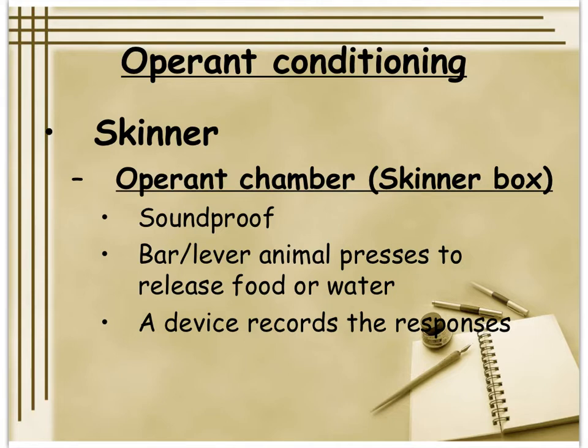Skinner is known for the Skinner box — a soundproof container where an animal could press a lever to release food or water. The device would record the responses so researchers could tell how many lever presses were required to get a reward, and they'd set it at different ratios or intervals to see how the animal responded. Skinner was constantly publishing, and when his second daughter was born, he designed an 'air crib' — an environment designed to respond to all the baby's needs — that got written up as a 'baby box.'